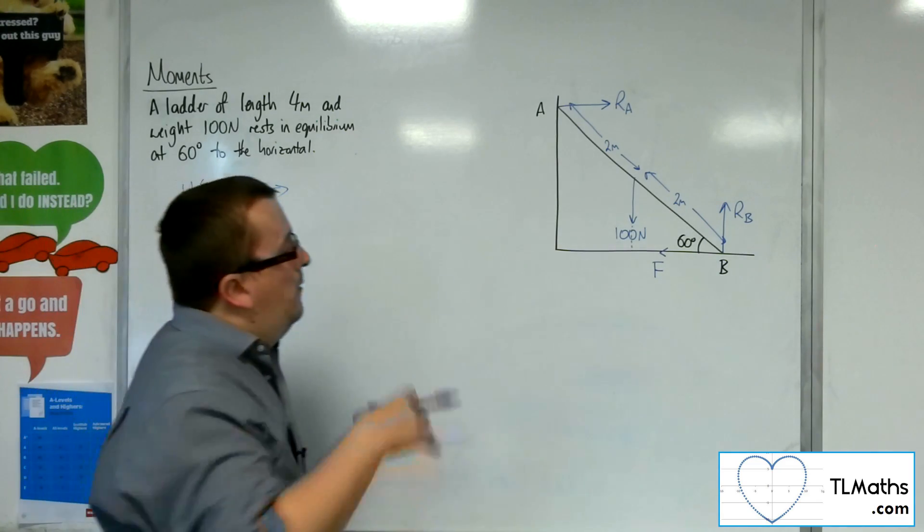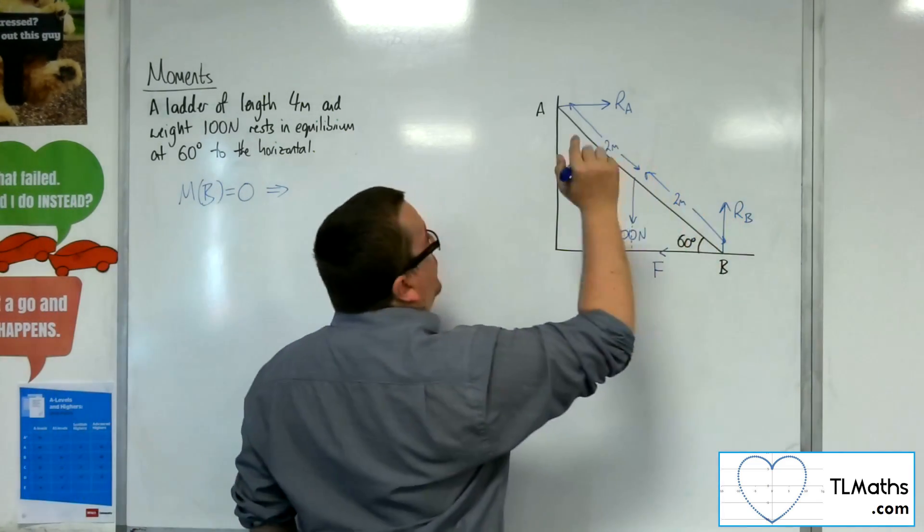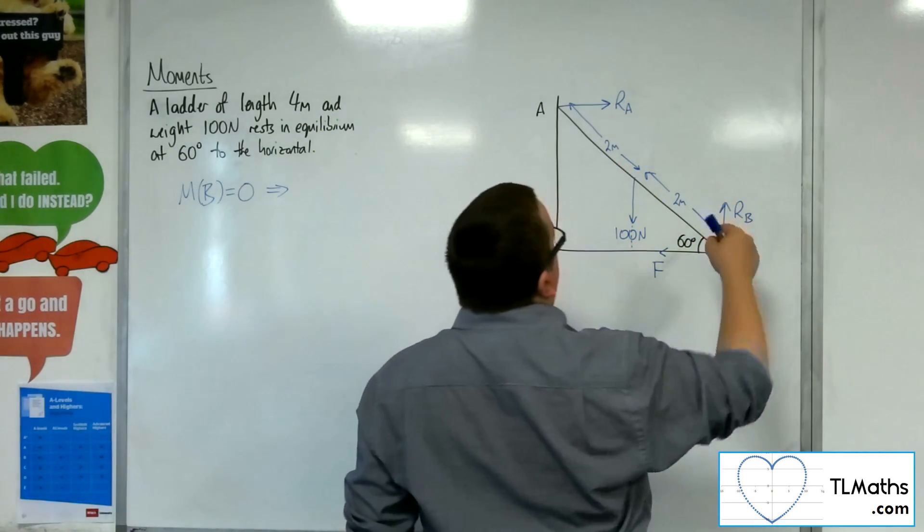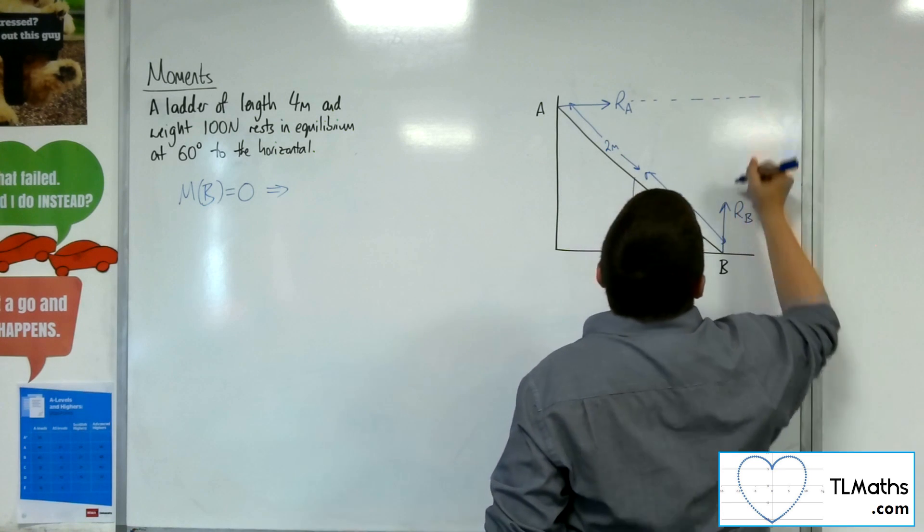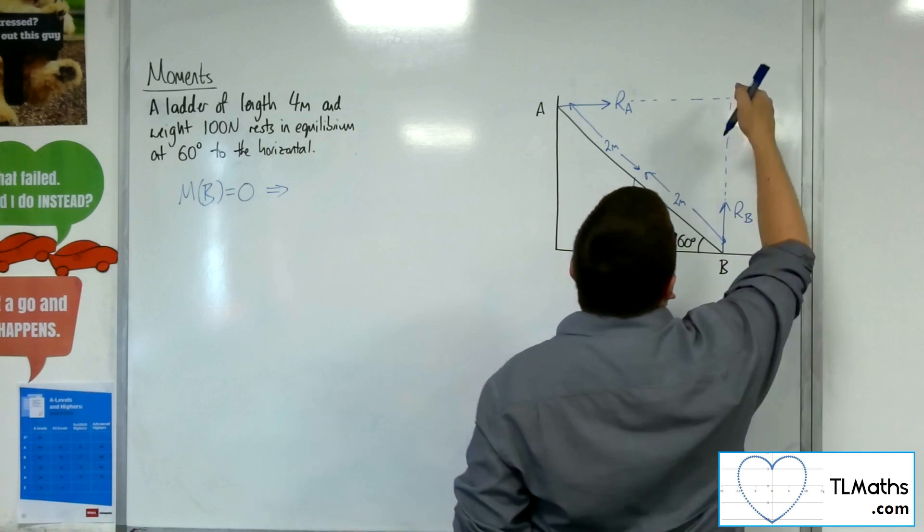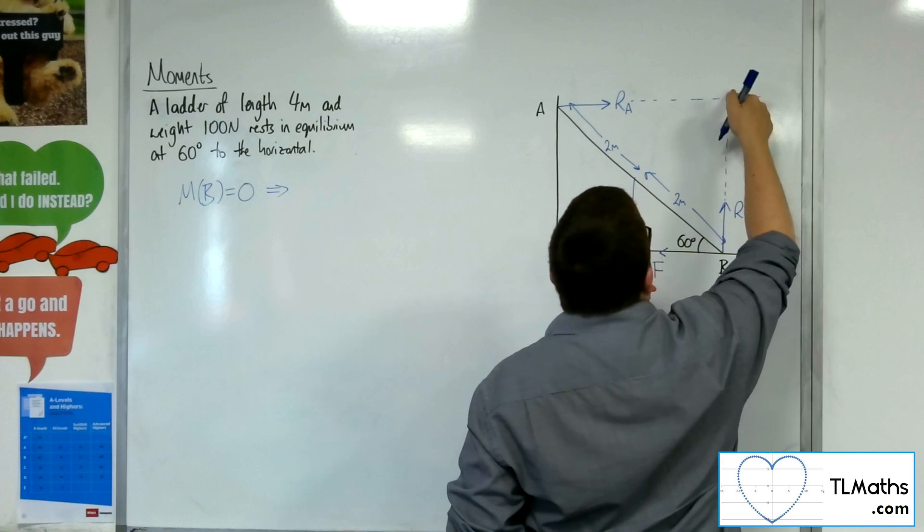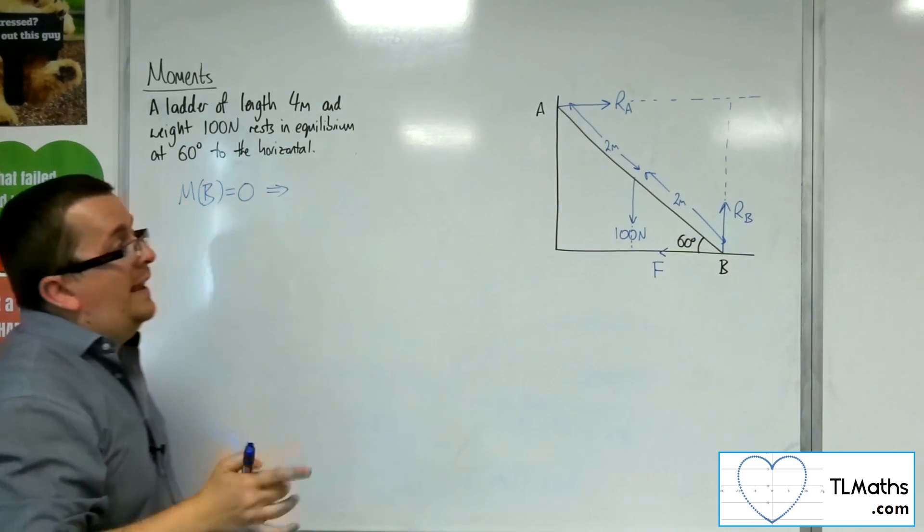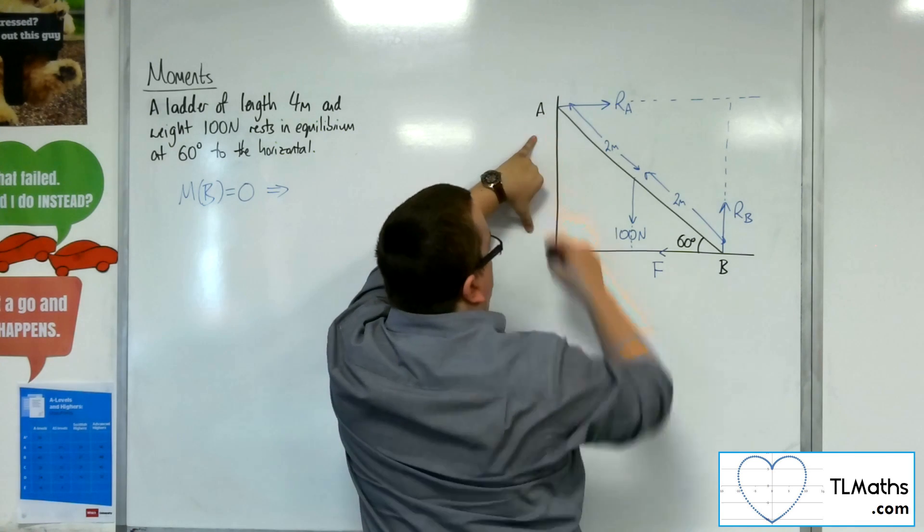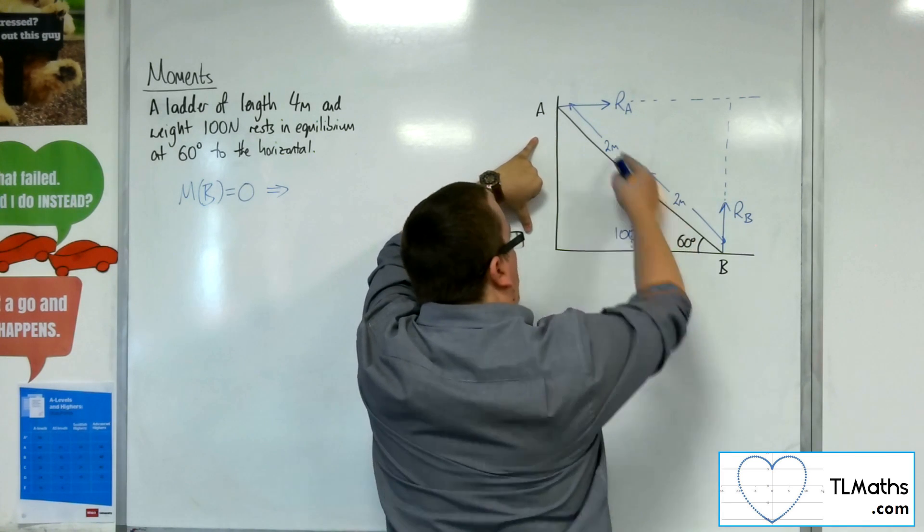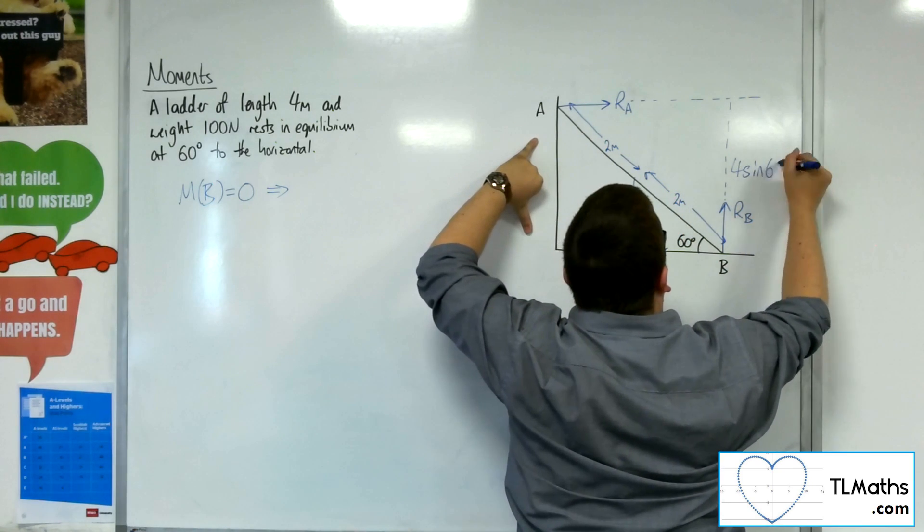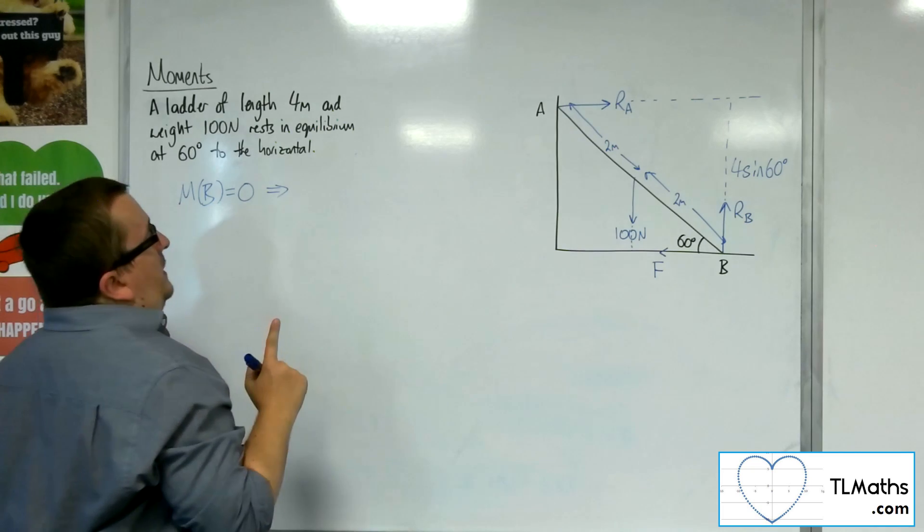So what we're going to do is we're going to take moments about point B. So if I'm going to take moments at B, then I've got this normal reaction force RA to consider. I need to figure out, if I project it onwards, I need that distance, the perpendicular distance from B to the force. So I need to know that length of that right angle triangle. Now, that length is going to be the same length as from there to there. So if the angle is 60 degrees, the hypotenuse is 4, that would be 4 sine 60.